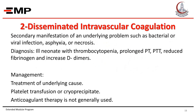Disseminated intravascular coagulation (DIC) is usually secondary to underlying problems such as bacterial or viral infection, asphyxia, or necrosis. Diagnosis is by thrombocytopenia, prolonged PT and PTT, reduced fibrinogen, and increased D-dimers. Management involves treating the underlying cause and giving platelet transfusion or cryoprecipitate. Anticoagulation therapy is not generally helpful.